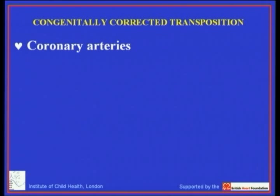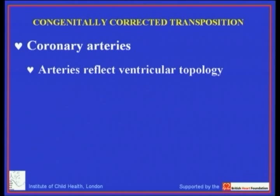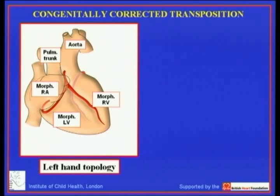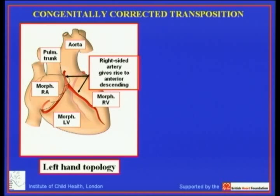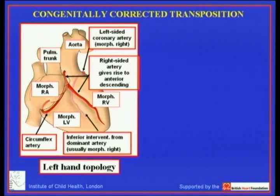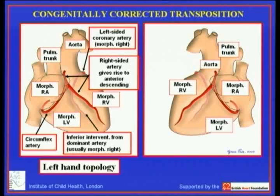We need to take note of the coronary arteries because the preferred surgical option nowadays is the double switch procedure, making coronary arteries crucially important. The arteries reflect the ventricular topology, and we note their sinusoid origin and epicardial distribution. In most cases of congenitally corrected transposition with left-hand topology, the right-sided artery has a short main stem giving rise to the anterior descending and circumflex arteries — this is the morphologically left coronary artery positioned on the right. The left-sided coronary artery is morphologically right and gives rise to the inferior interventricular artery.